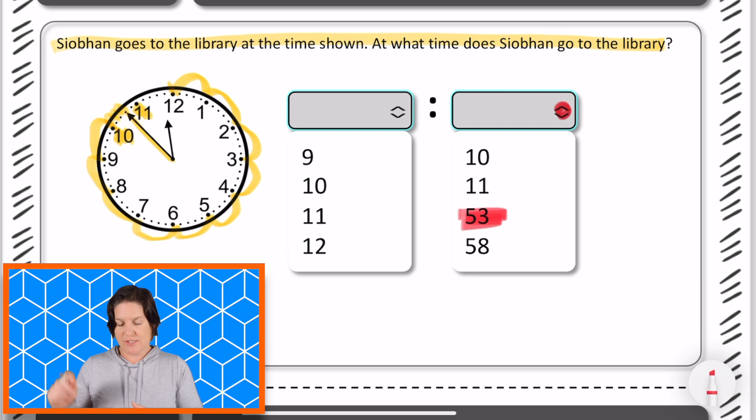So if this were a computer based test, you would click on that drop down menu and select the answer that you want, which in this case, it's 53.